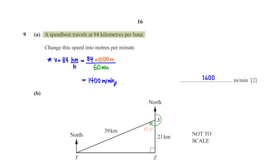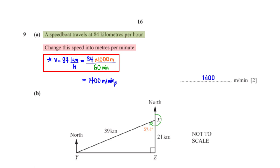A speedboat travels at 84 kilometres per hour. Change this speed into metres per minute. We convert 84 km to metres by multiplying by 1,000, and 1 hour to 60 minutes. Dividing gives 1,400 metres per minute.